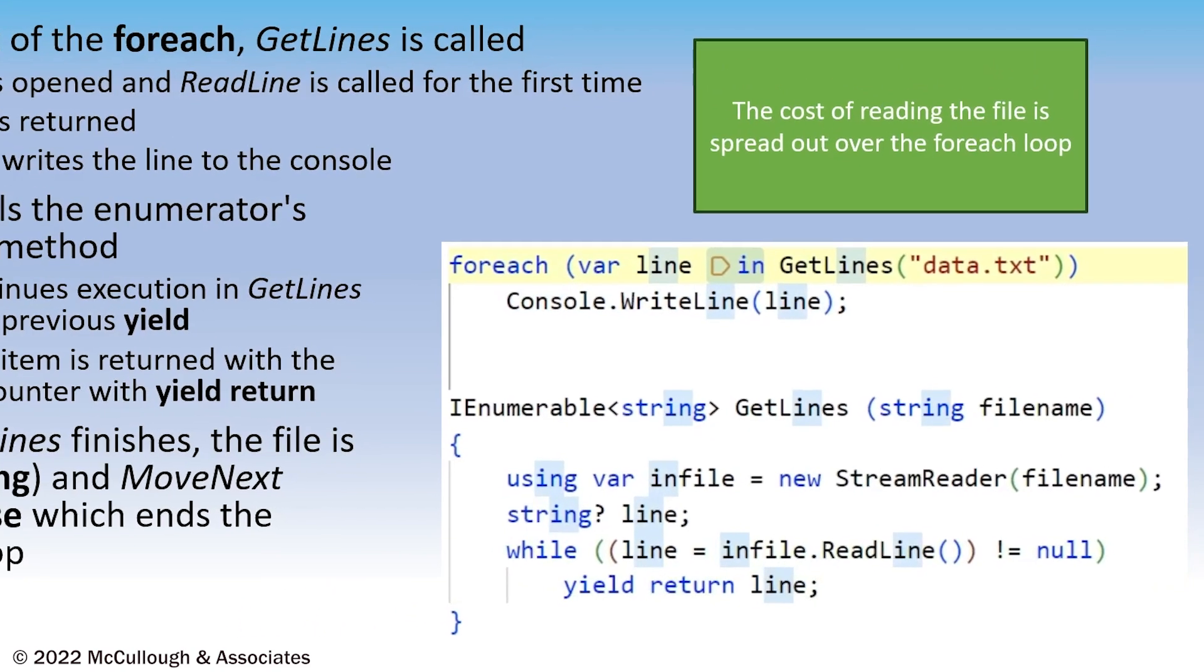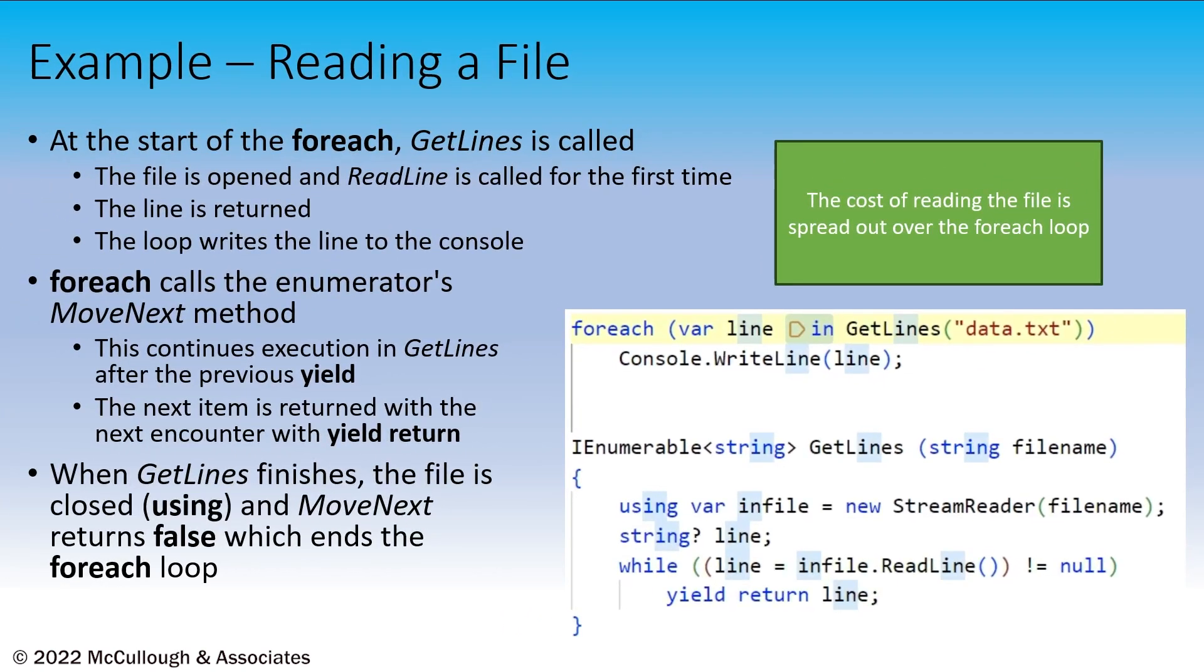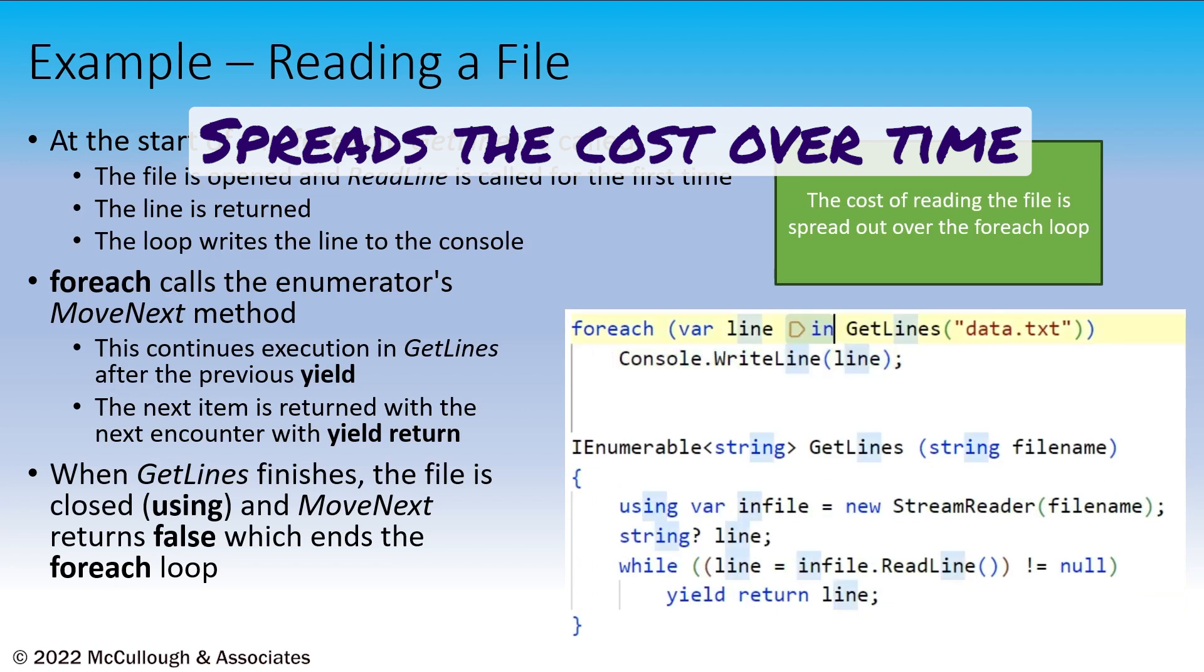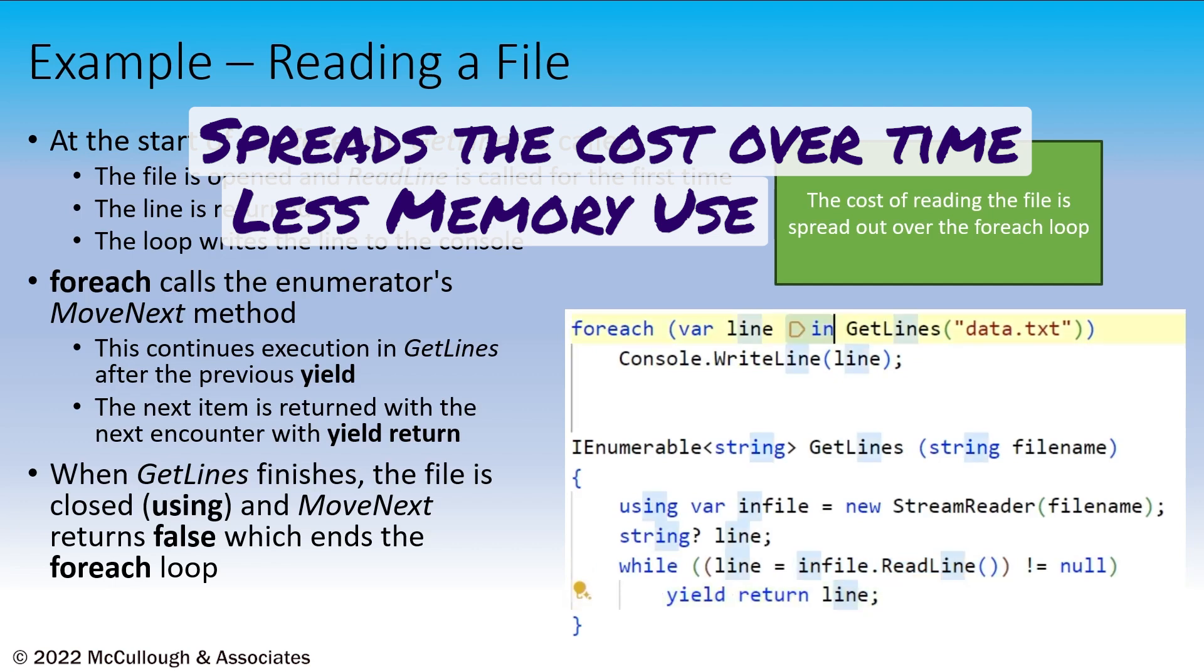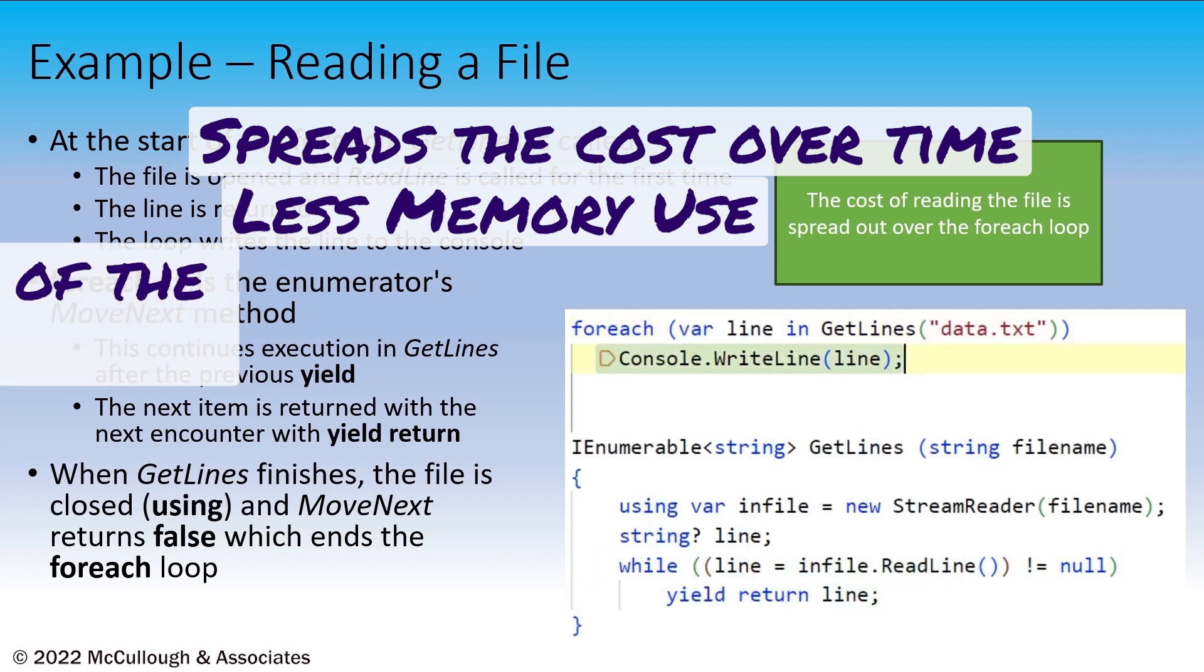There are several advantages to using this approach with yield return instead of creating an in-memory collection. For one, the cost of reading the file is spread out over the processing of those elements rather than incurring all of that cost up front. Secondly, the content of the file is not loaded into memory by the GetLines method. Now, maybe we load it into memory somewhere else, but the GetLines method itself does not do that.